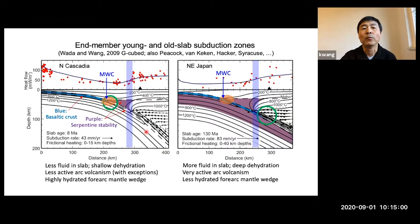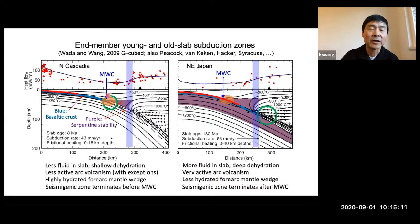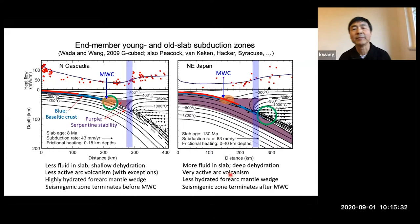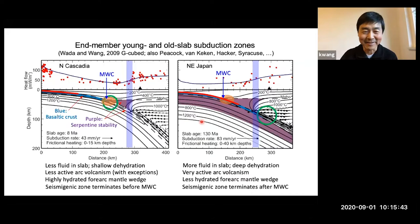The other important difference is the seismogenic zone depth. For young warm slabs, because of higher temperature and rheology, the seismogenic zone will end at much shallower depths than for cold slabs. All these characteristics are important for the rest of the talk. The first topic — the thermal and petrological state of the forearc mantle wedge — is my temperature component.